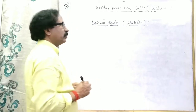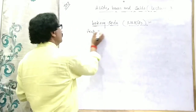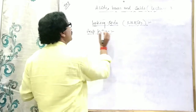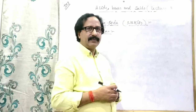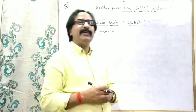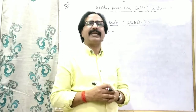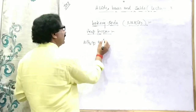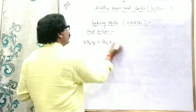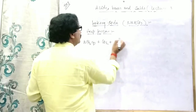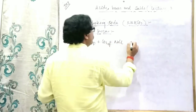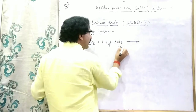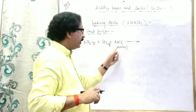Now for baking soda, let's see its preparation process. It is formed by the combination of ammonia, carbon dioxide, water, and NaCl — that is, we allow ammonia gas to mix in the aqueous solution of NaCl along with carbon dioxide. The aqueous solution of NaCl is also known as brine — you should remember that.